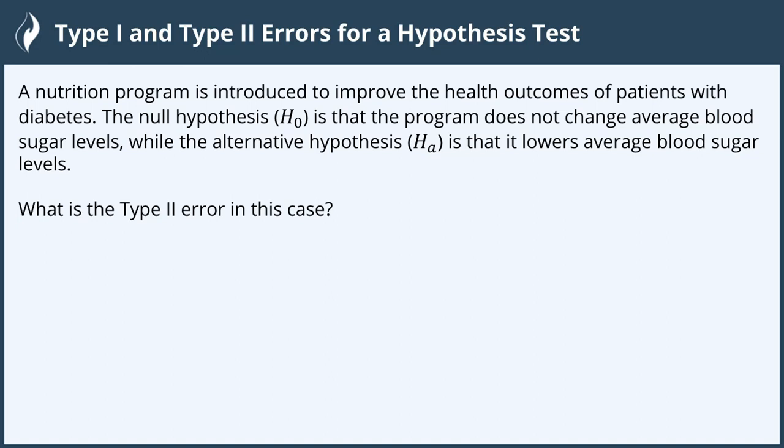Hi everyone. In this video we will identify type 1 and type 2 errors for a hypothesis test. A nutrition program is introduced to improve the health outcomes of patients with diabetes. The null hypothesis is that the program does not change average blood sugar levels, while the alternative hypothesis is that it lowers average blood sugar levels.